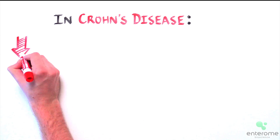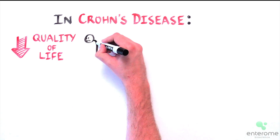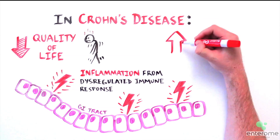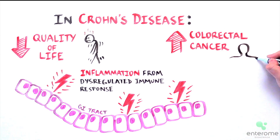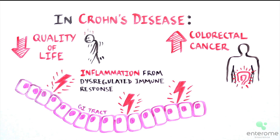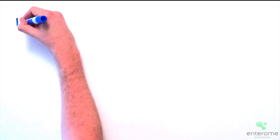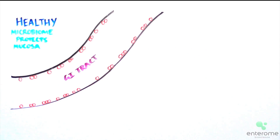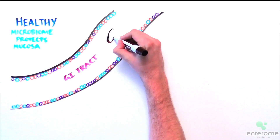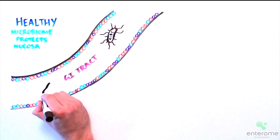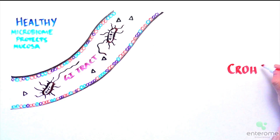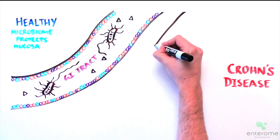In the case of Crohn's disease, quality of life is altered and chronic inflammation puts patients at risk of developing colorectal cancer. In healthy subjects, the gut microbiome efficiently protects the mucosa from aggressive agents. However, in Crohn's disease, dysbiosis induced by autoimmunity gives place to the accumulation of pathogens.